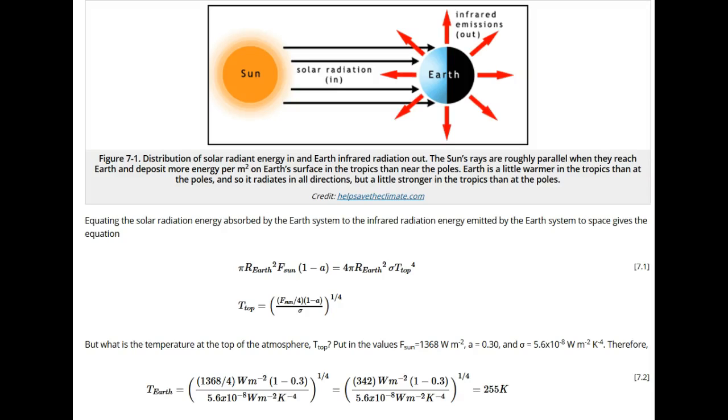To calculate the average temperature at the top of Earth's atmosphere, we need to look at the balance between the solar radiation energy coming into the Earth system against the infrared radiation going out of the Earth system.